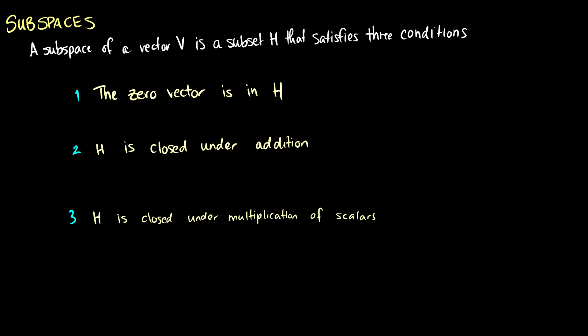A subspace of a vector space V is a subset H that satisfies three conditions. Number one, the zero vector is in H. We know that the zero vector is required to be in a vector space V, so it's also going to be required to be in a subspace.